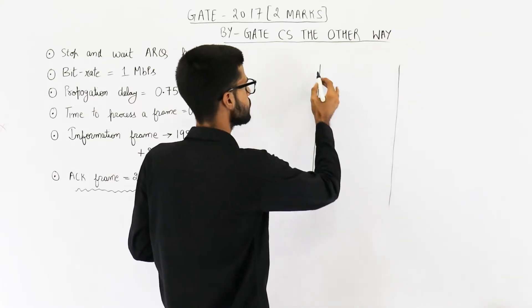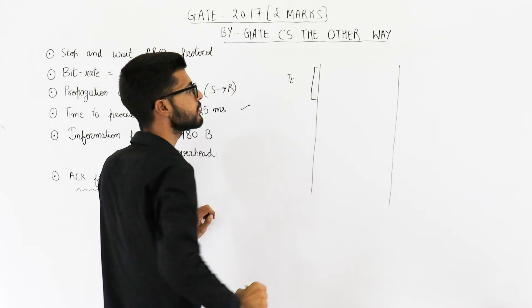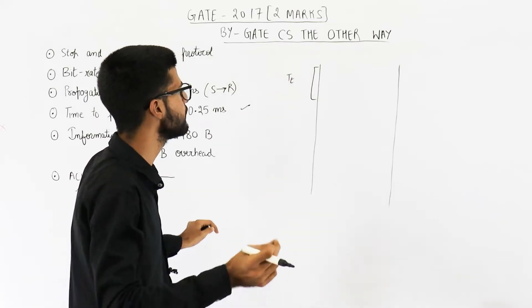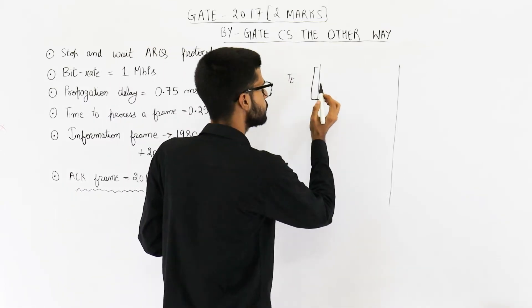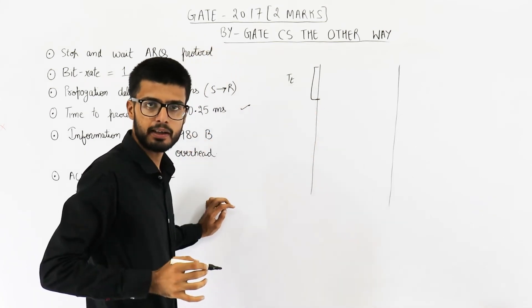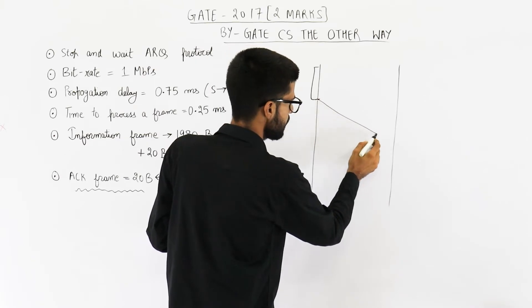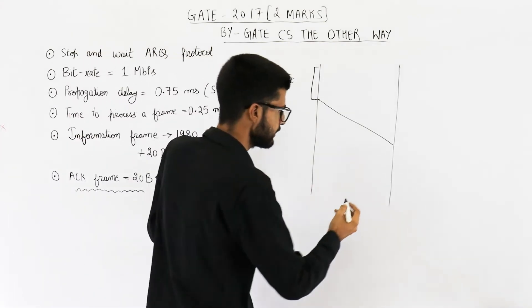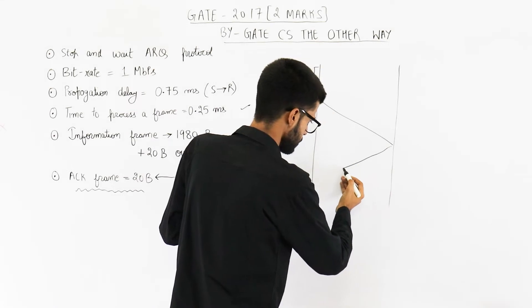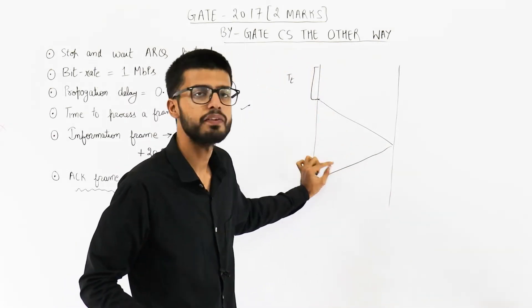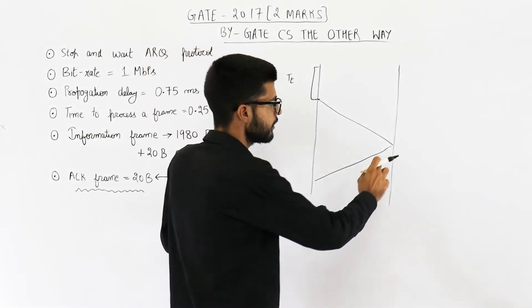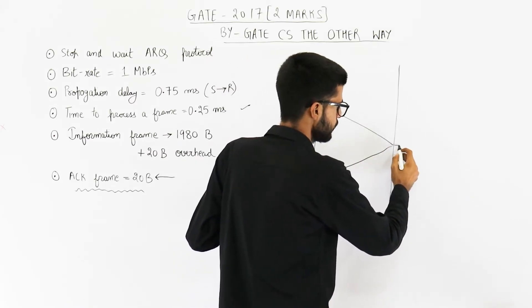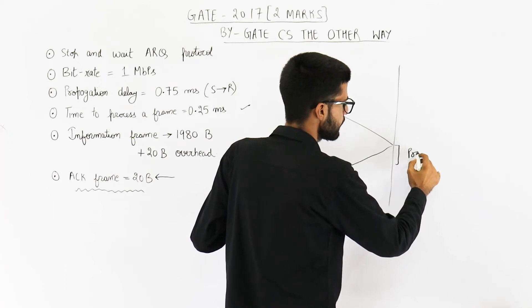What we generally do is say suppose TT time is taken by the sender to transmit the frame — that means put the frame onto the channel bit by bit. At this time, the last bit of the packet is put onto the channel. This bit will take some time to travel through the channel and reach the receiver. Generally we draw the acknowledgement right away, but in this case the receiver will take some time to process the frame.